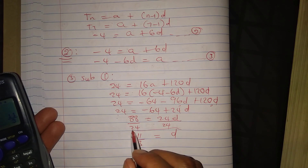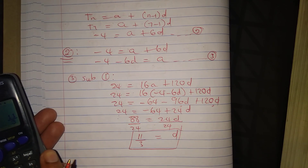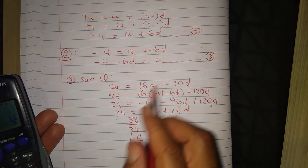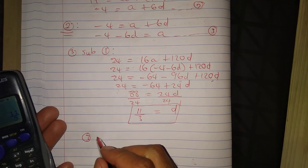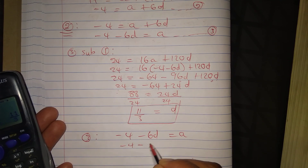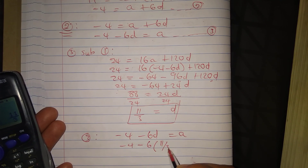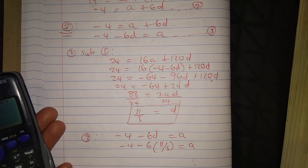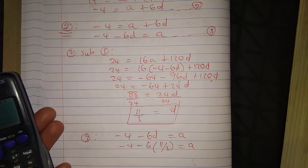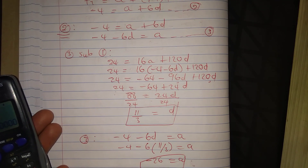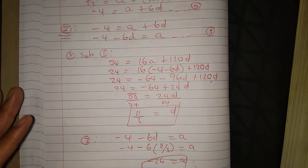Dividing both sides by 24: D = 88/24 = 11/3. Substituting back into equation 3: A = -4 - 6(11/3) = -4 - 22 = -26. So A = -26 and D = 11/3.